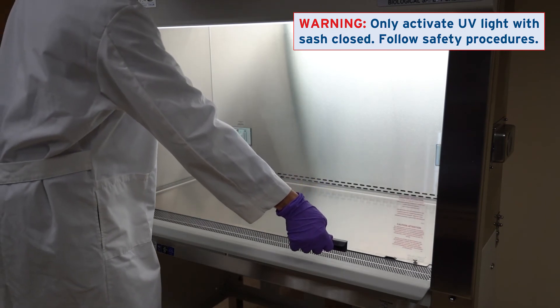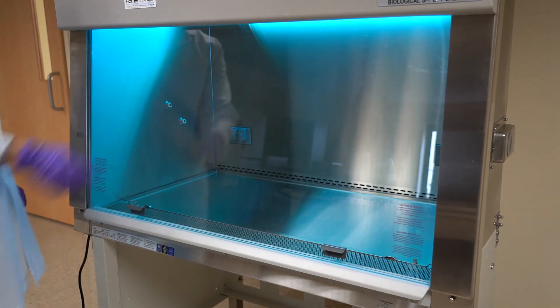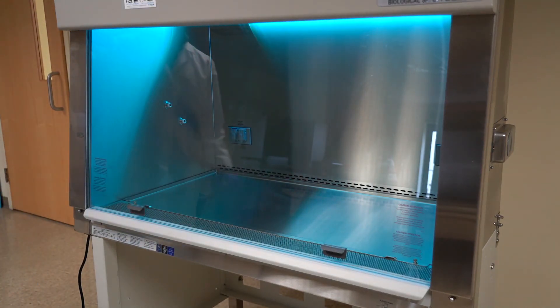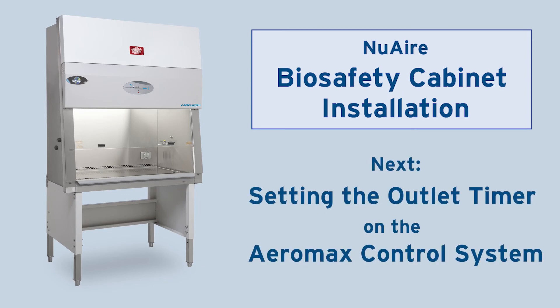When the sash is closed, you may turn on the optional UV light. Watch the next video to learn how to use a timer with the outlet function.